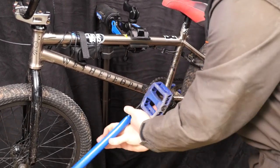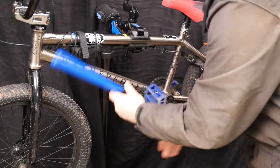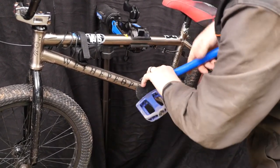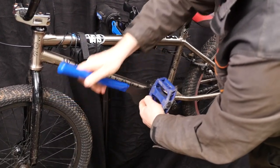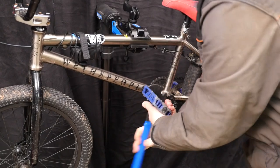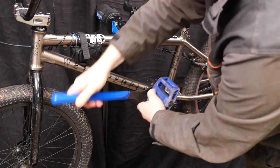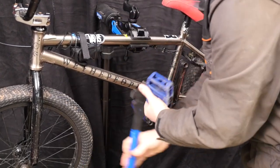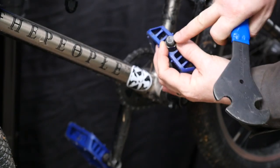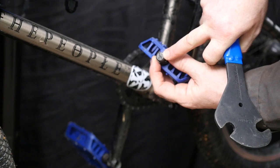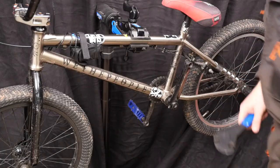So on this one which is the left-hand pedal, note that it is actually undone by turning it clockwise, which is quite unusual when most conventional screws and threads are done up clockwise. So just remember that one for the left-hand pedal. Also note on the end of the pedal it says L for left.